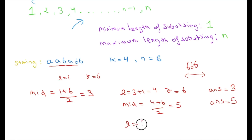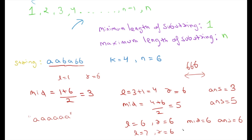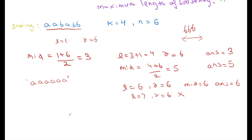Now l becomes 6 and r becomes 6, so the mid value is also 6. Let's check if a beauty of 6 is possible. The sub-string of length 6 has frequency of a equal to 3 and b equal to 3, so we can change any character. If we change the b's into a, the sub-string becomes all a's, consisting of only the same character. So 6 is also possible, our answer becomes 6, and then r becomes 5, which is less than l, so the condition terminates and the maximum beauty is 6.